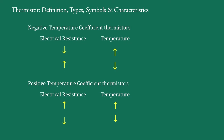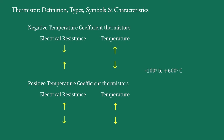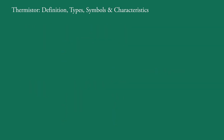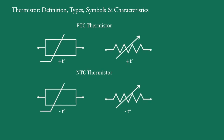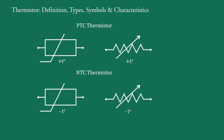Thermistors are capable of operating over a temperature range of minus 100 degrees Celsius to 600 degrees Celsius. The symbols of thermistors are like this — this is for PTC thermistors and this is for NTC thermistors. It is sometimes drawn one way and sometimes another way; both types of symbols are valid.